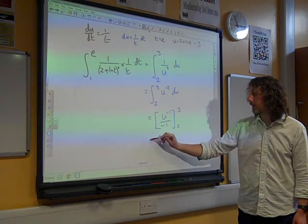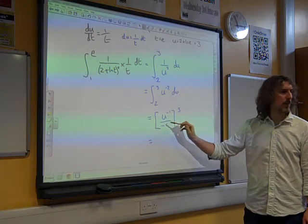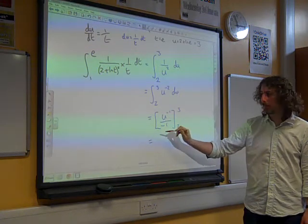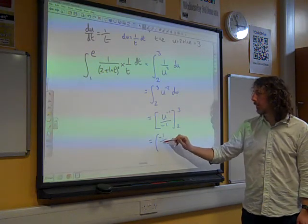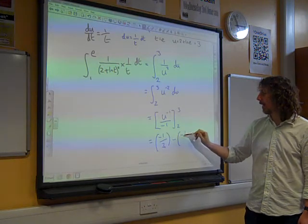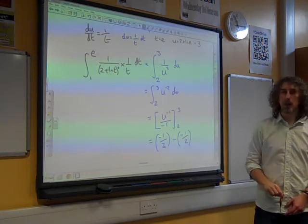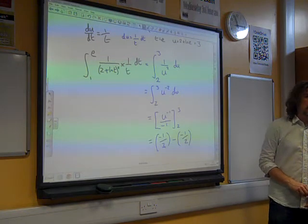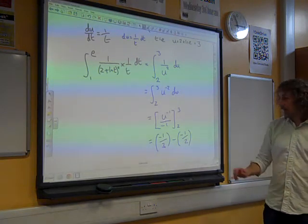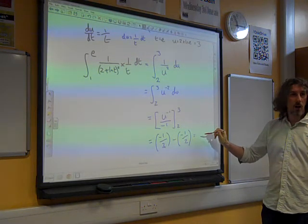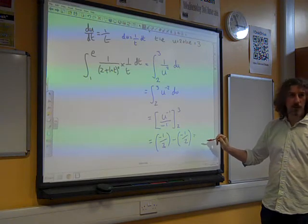And if we sub in the limits we've got, that really means minus 1 over u, doesn't it? So we've got minus 1 over 3, take away minus 1 over 2. And the nice answer that we end up with here is going to be a sixth.